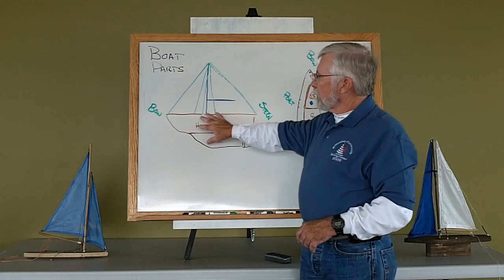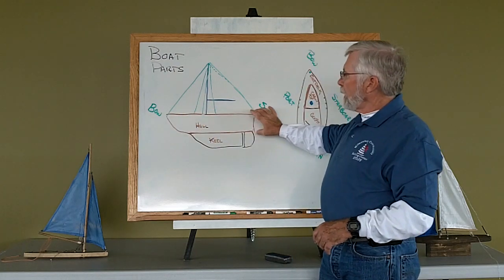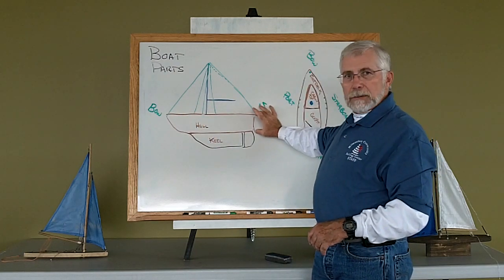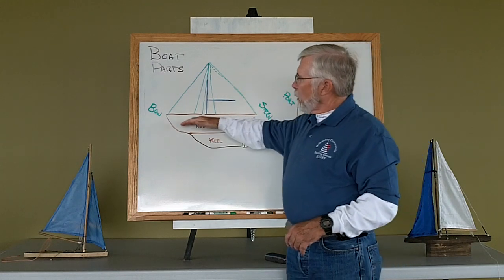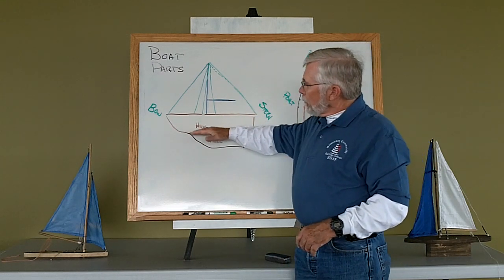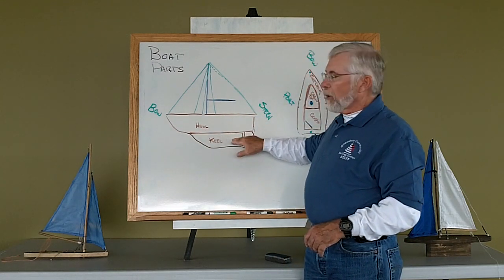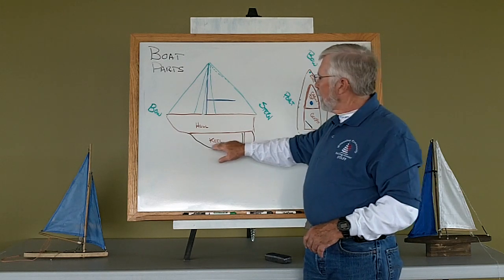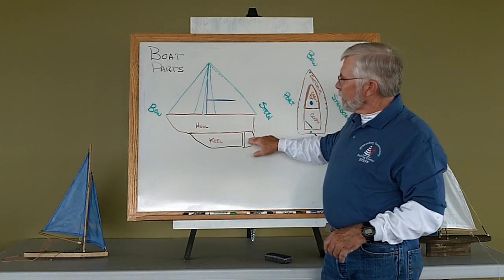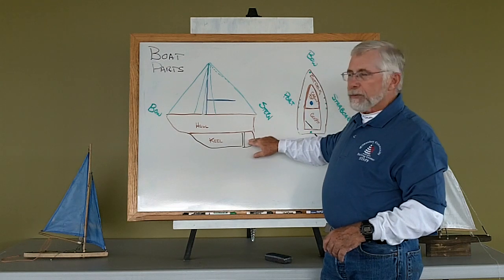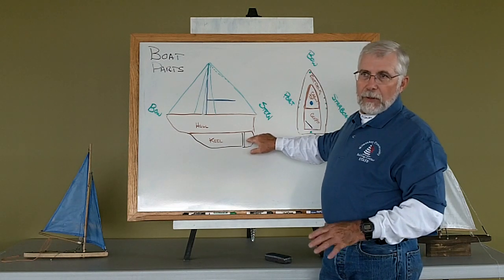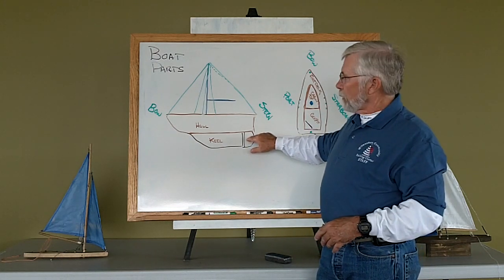The basic boat - the main part of the boat is called the hull that sits in the water, and below the hull is what we call a keel. At the back of the keel is called the rudder, and we use the rudder ultimately to steer the boat.